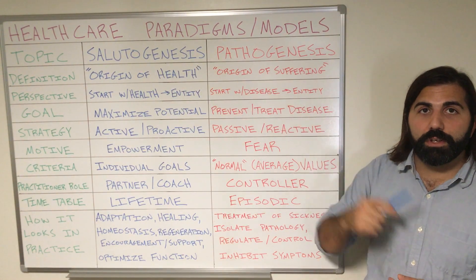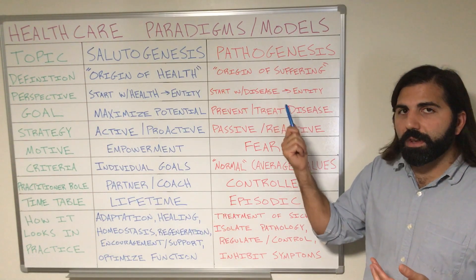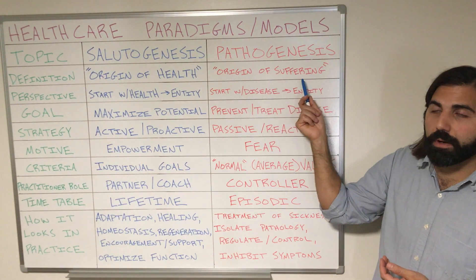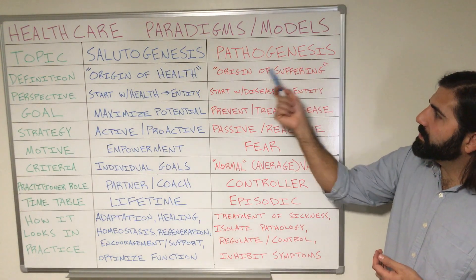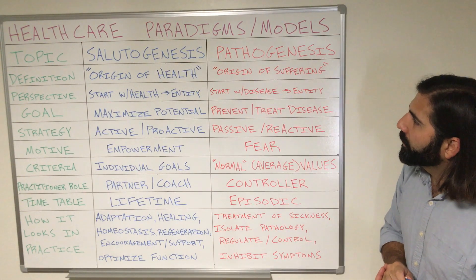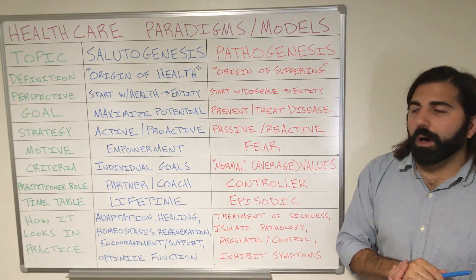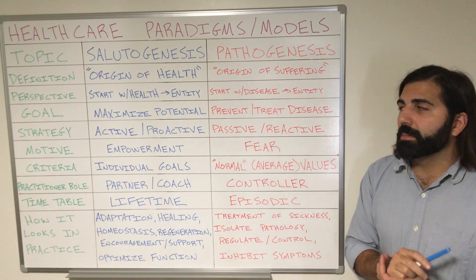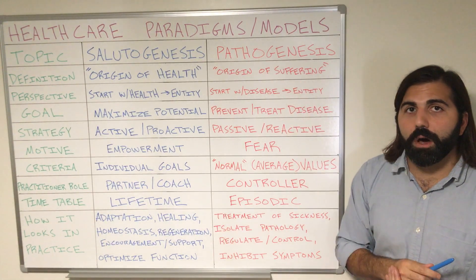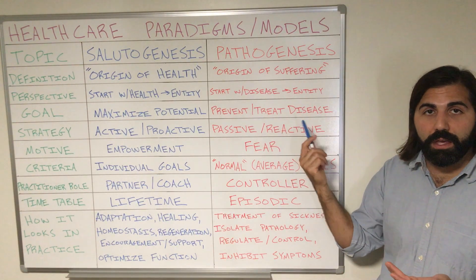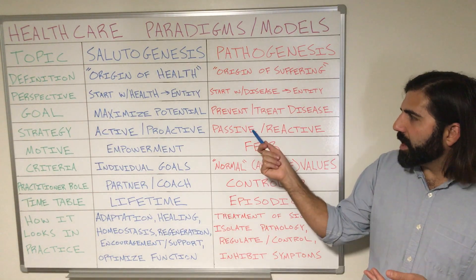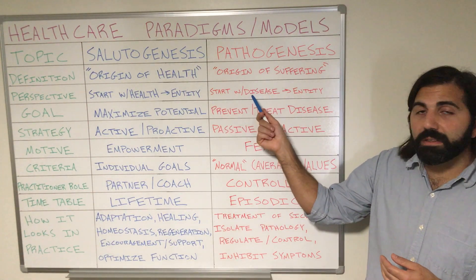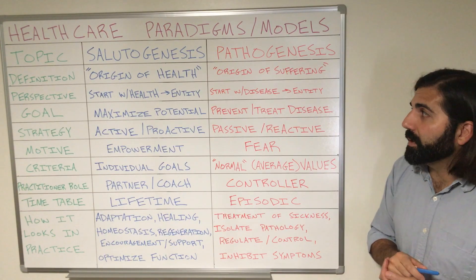Let's break down pathogenesis first. The literal definition of the word pathogenesis means origin of suffering. Pathos means suffering, disease, or sickness, and genesis means the origin of or the birth of. The perspective of the pathogenic model makes the starting point disease — disease will be the entity or thing that needs to be addressed. The goal within this model is to try to prevent and/or treat said sickness or disease. This strategy is going to be very passive and reactive in nature.